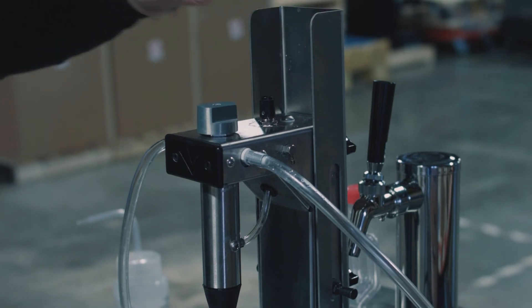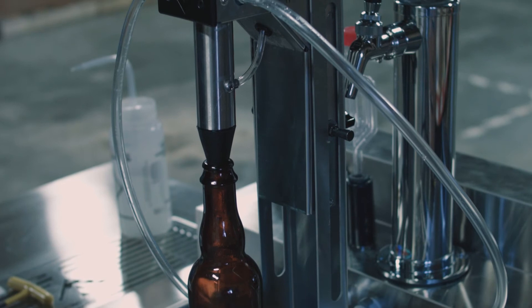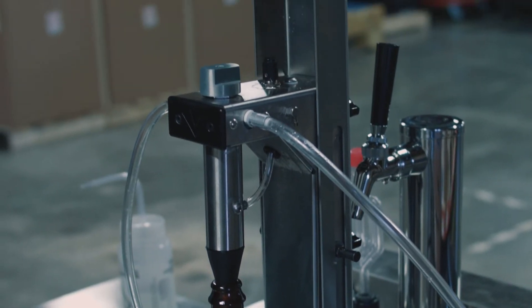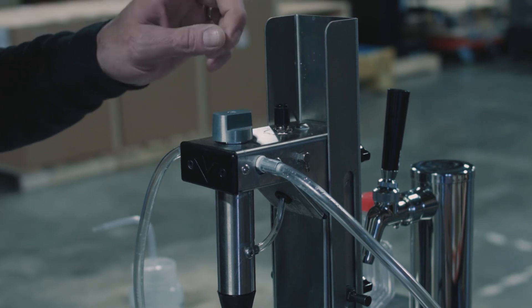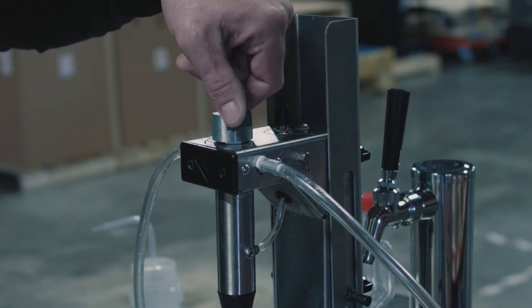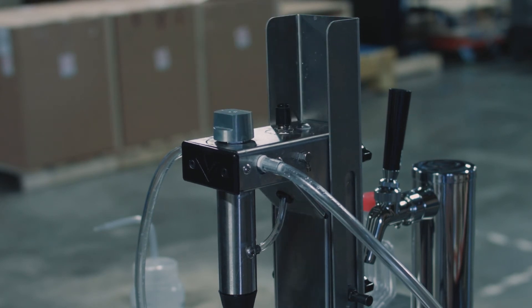Okay, so the first thing we want to do is we've placed our sanitized bottle underneath this, and we want to make sure that the flow control valve is turned clockwise all the way to the closed position. Once that is done, we're going to turn this valve to the CO2 fill position.